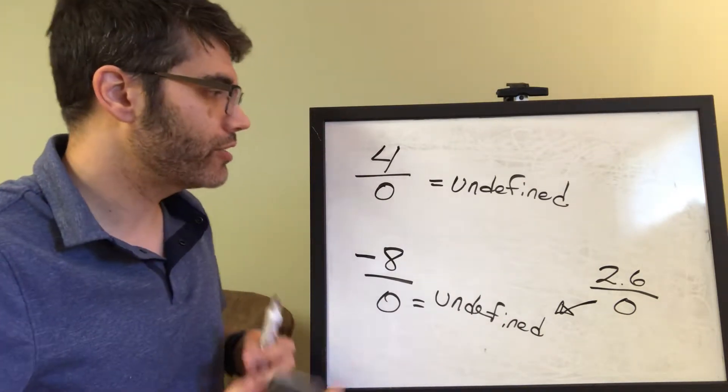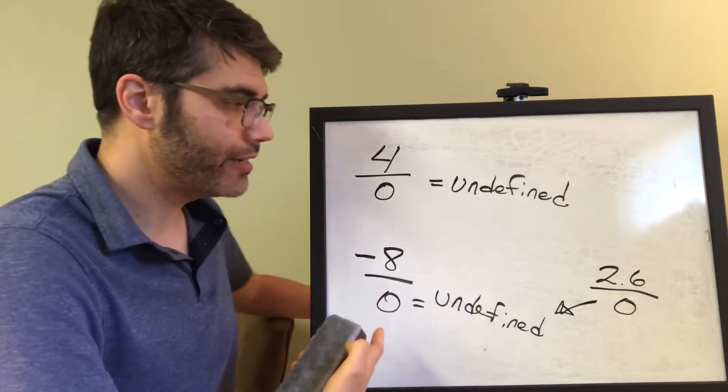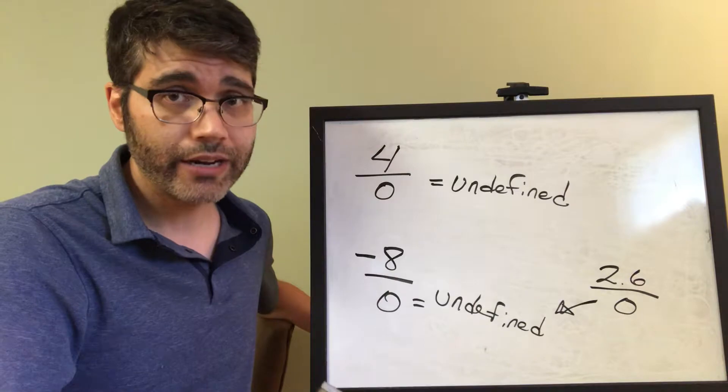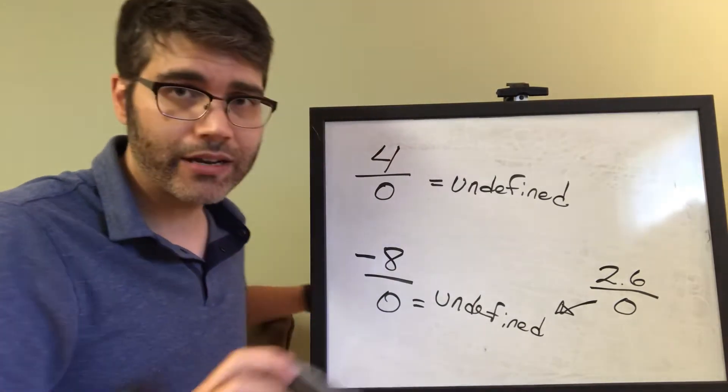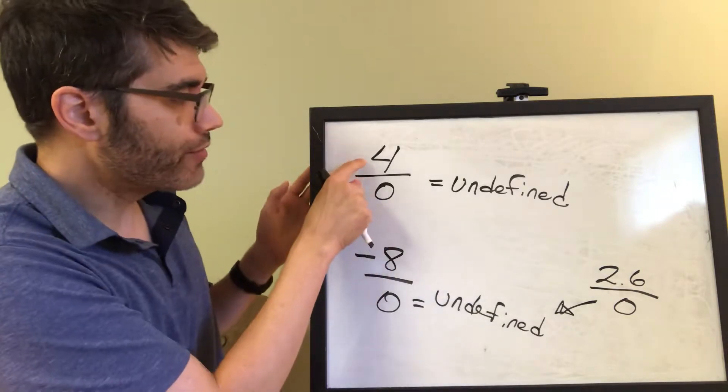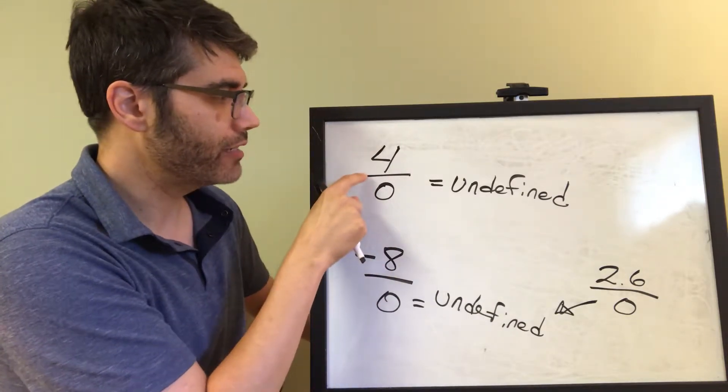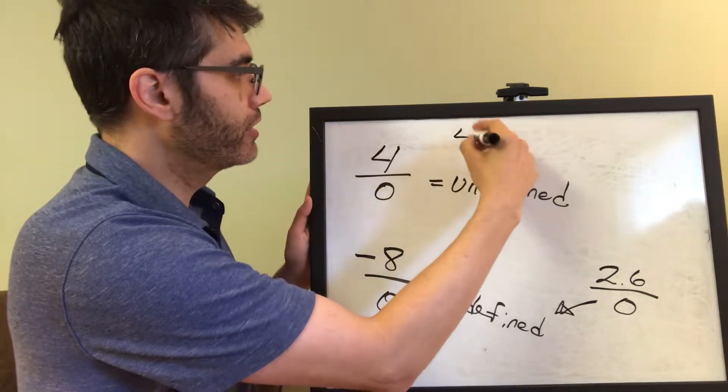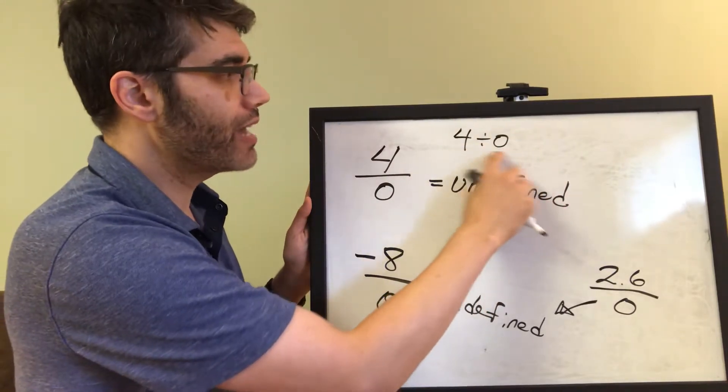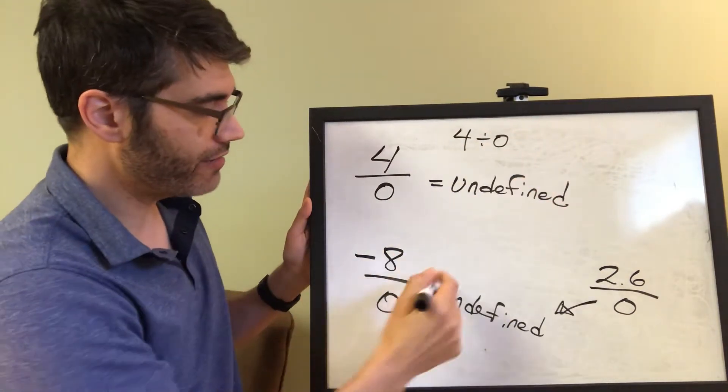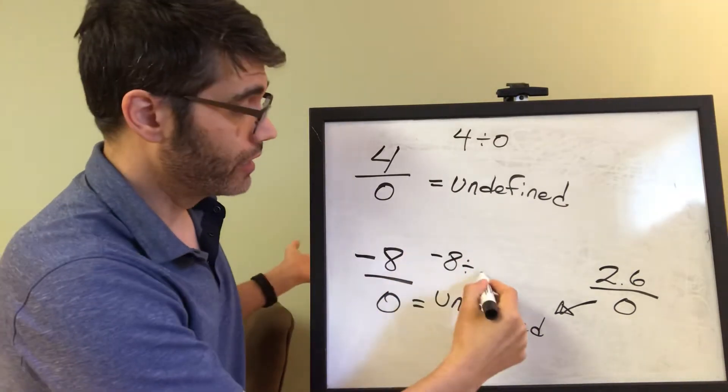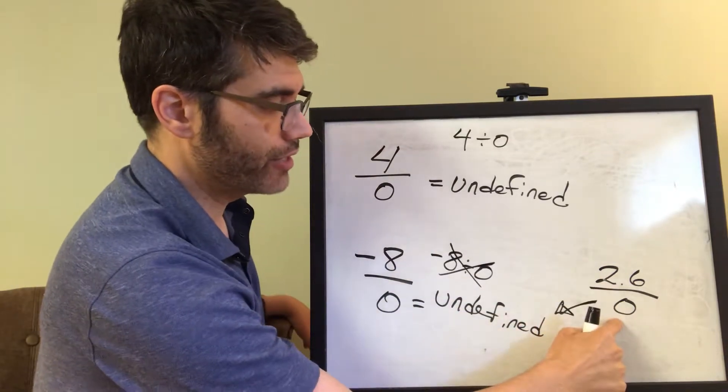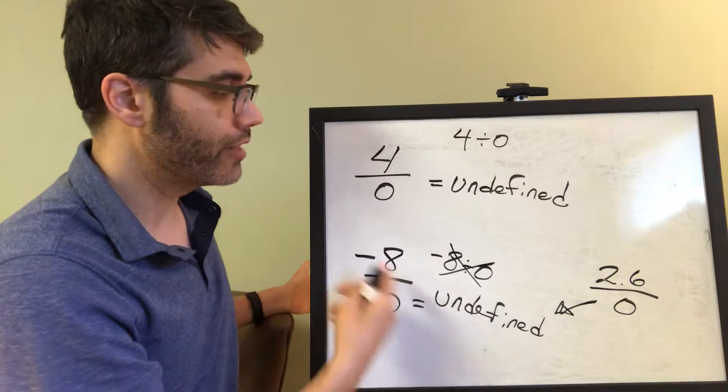So what's the explanation as to why when 0 is in the denominator, it's undefined? Well, remember, we cannot divide by 0. So dividing by 0 is something that is not allowed. And whenever we have a fraction, the numerator is being divided by the denominator. That's another way to interpret a fraction. So this fraction would be interpreted as 4 divided by 0. Since you cannot divide by 0, we call it undefined. Here, negative 8 is being tried to be divided by 0. You can't do it. So we call it undefined. Here, 2.6 divided by 0. Can't do it. You cannot divide by 0. So that's why we call it undefined.